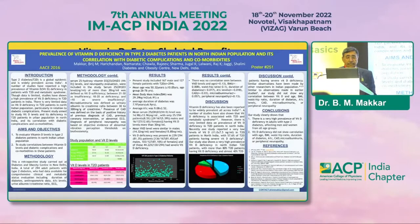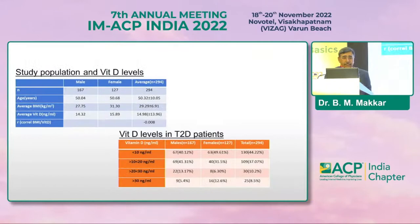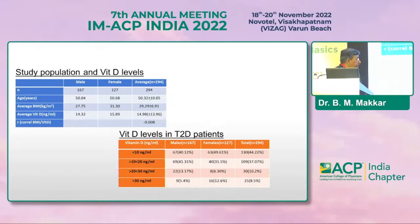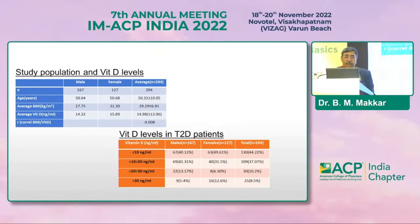We did a small study at our center, looking at 296 people with type 2 diabetes who had their vitamin D levels measured. The study included 167 males and 127 females with diabetes, with an average age of around 50 years. The average vitamin D level was 40.98. Breaking down the results: only 8.5% had normal vitamin D levels (sufficient, more than 30 nanograms per ml), about 10% had insufficiency (20 to 30 ng/ml), and 80% were vitamin D deficient.